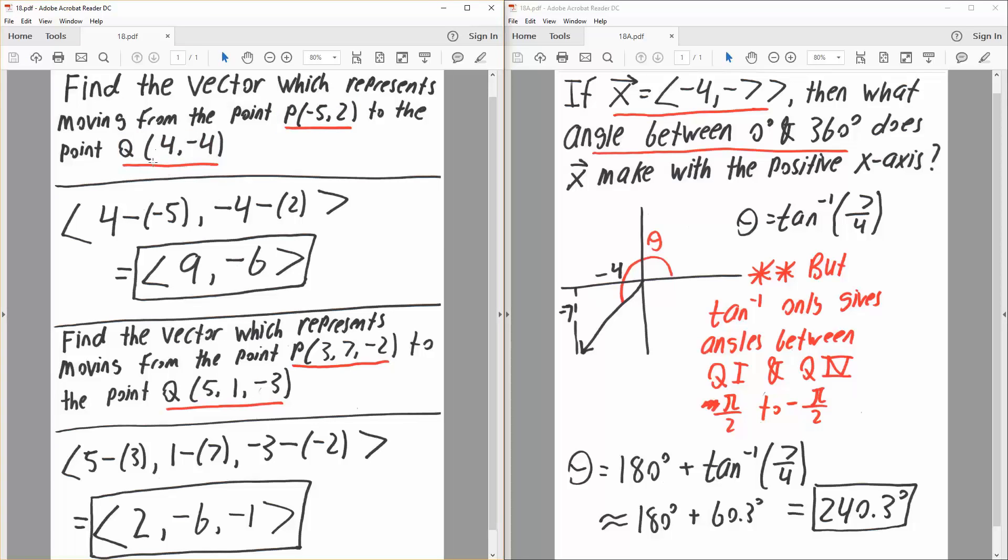In order to solve this problem, we do our endpoint minus start. So 4 minus (-5), then we do the y-axis, so -4 minus 2. The vector would be 4 minus -5 is 9, -4 minus 2 is -6. So this is our final answer.